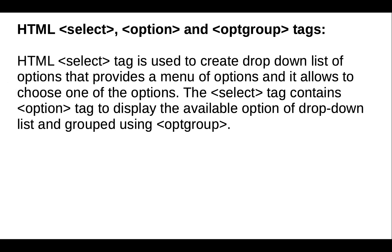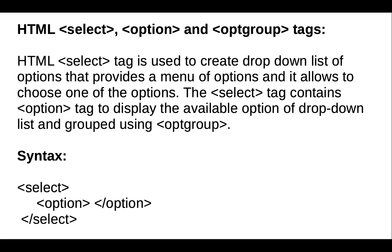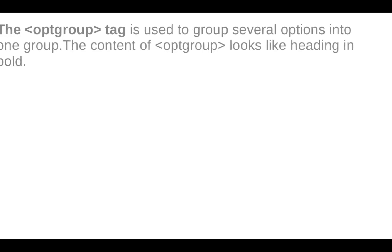The HTML select tag is used to create a drop-down list of options that provides a menu of options and allows you to choose one option. The select tag contains option tags to display the available options of the drop-down list. The syntax is: first we open the select tag, in between that we add a number of options using the option tag, and then last we close the select tag.